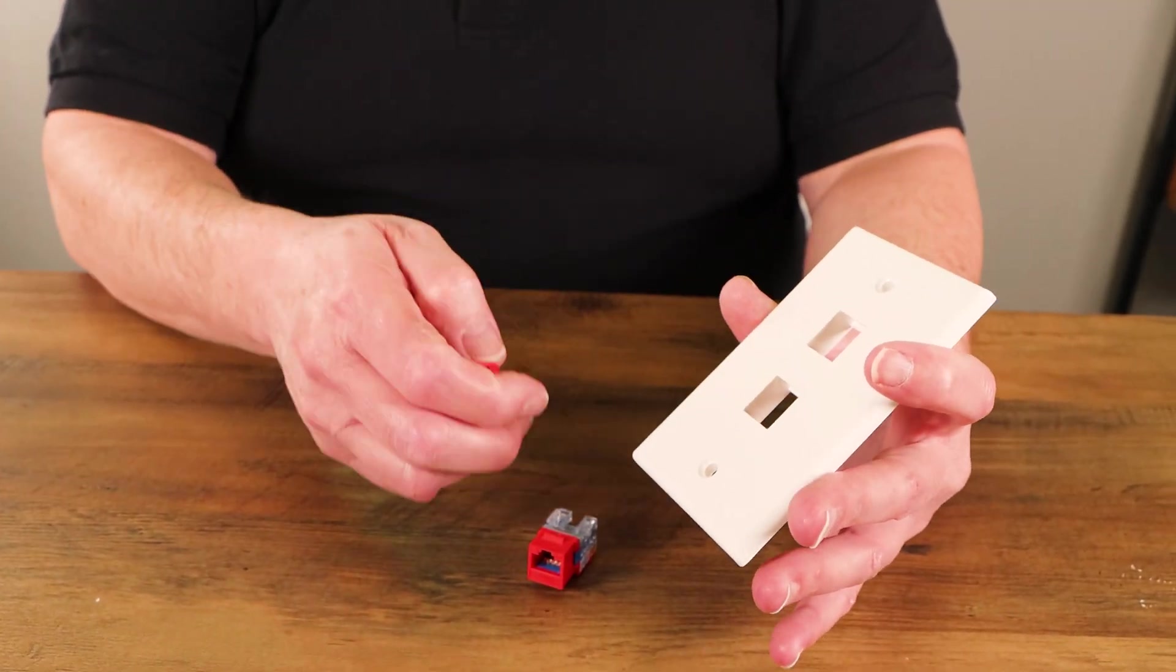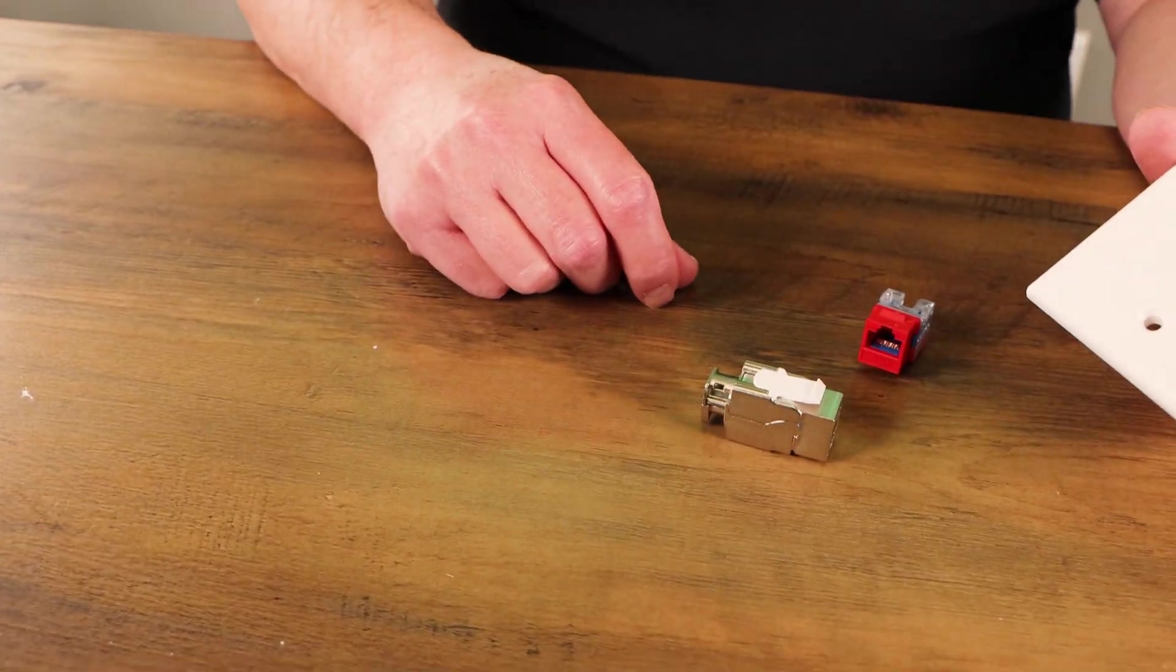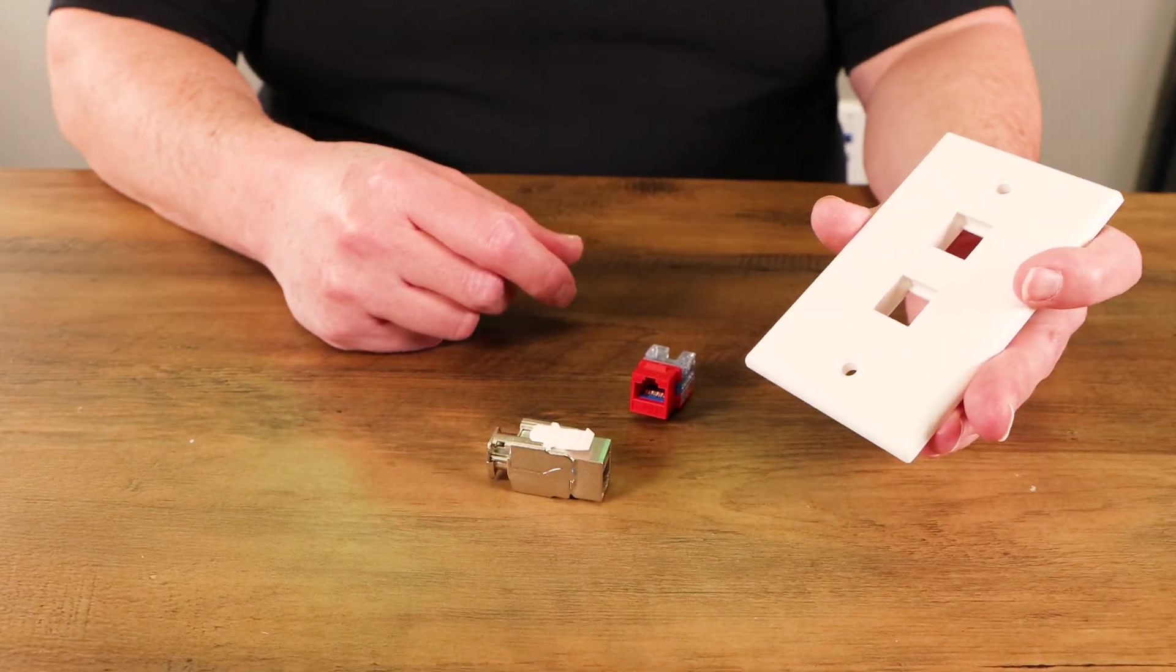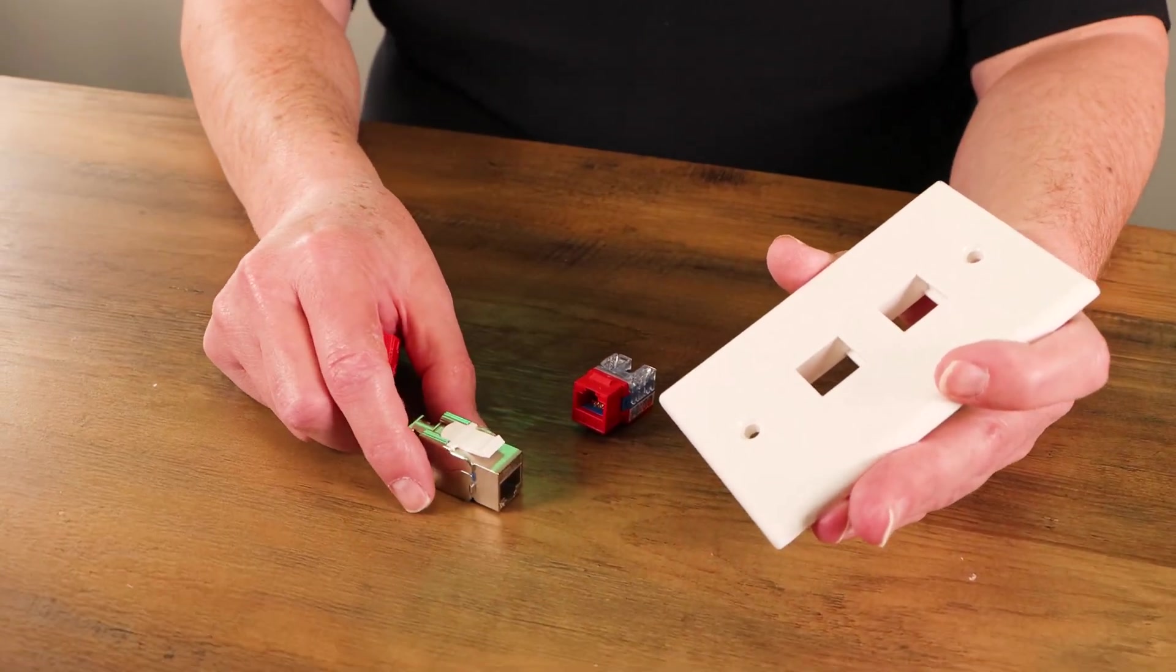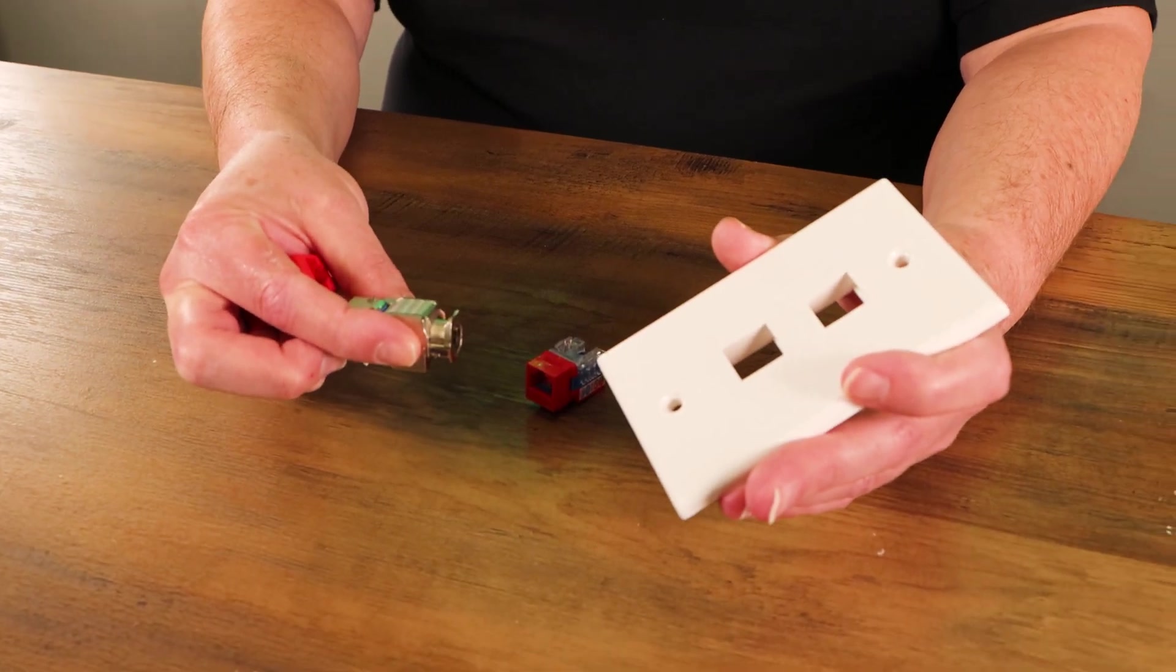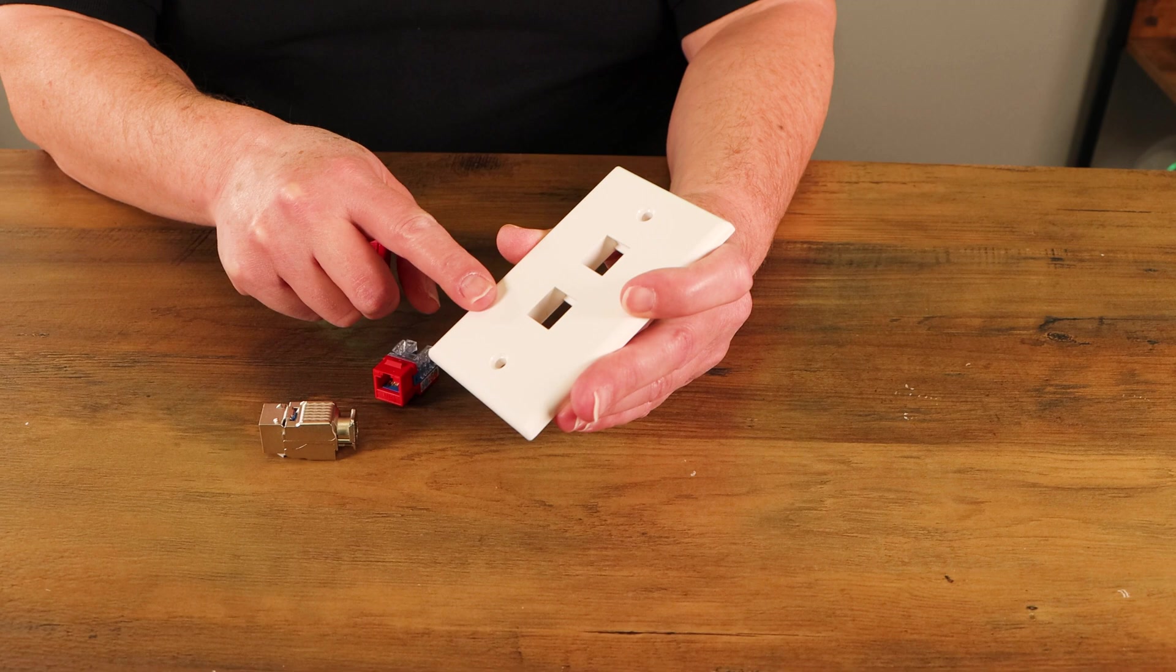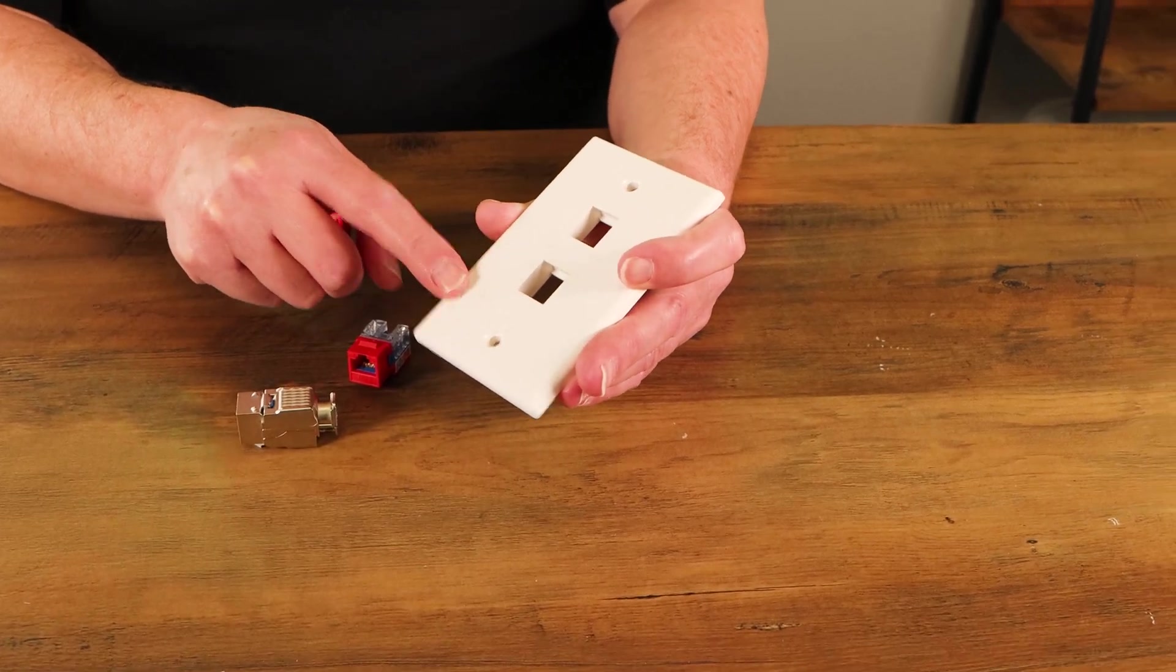Another question that I get occasionally is if you're using a shielded keystone jack, must you have a metal wall plate? And the answer is no, because the cable shield is going to bond to the keystone and that's how your bond to ground is going to go. It doesn't depend on the wall plate. It's not part of the bond and ground system.